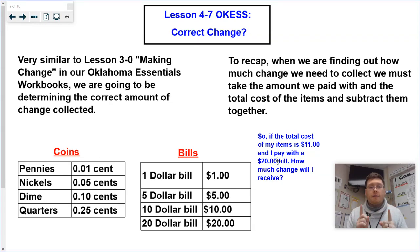So today's lesson is lesson 4-7. This is in our Oklahoma Essentials book. We are trying to find correct change. Very similar to our lesson 3-0 in our Oklahoma Essentials book, Making Change, we're going to be determining the correct amount of change collected.